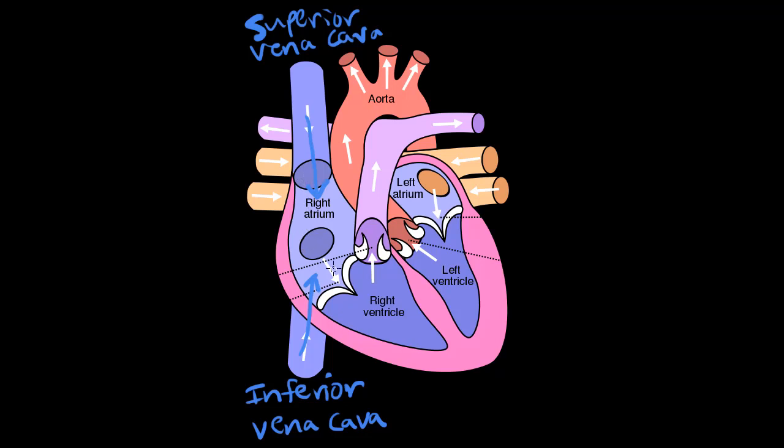It's going to flow from the right atrium. We're going to go through the tricuspid valve to the right ventricle. That's going to contract, and it's going to push the blood through the pulmonary semilunar valve into here, which is called the pulmonary artery.